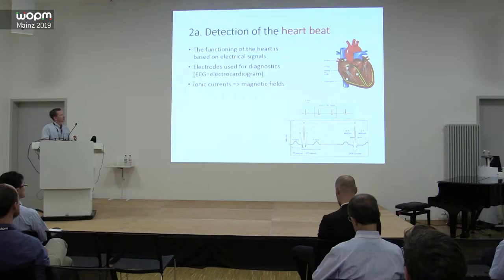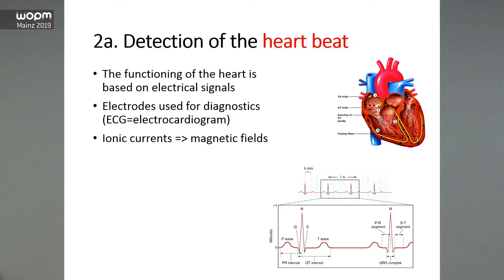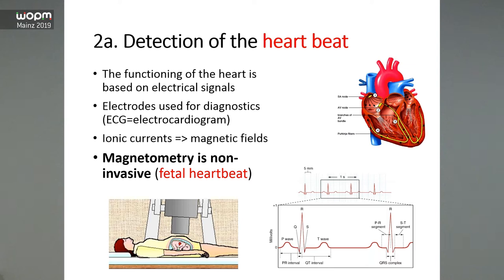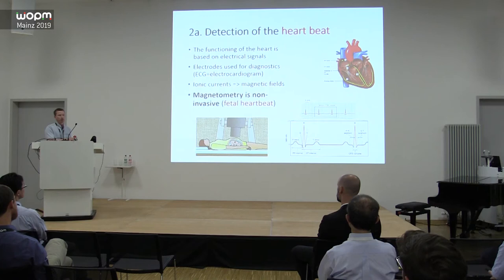All those electrical signals have associated magnetic fields which we can measure with a sensitive magnetometer. The magnetometer is non-invasive, so you can infer what's going on inside the heart by detecting from outside. In particular, if you want to detect the fetal heartbeat, this is very nice to do with magnetometers because you cannot place electrodes directly on the fetus. This is already possible with SQUIDs and more recently with optically pumped magnetometers.